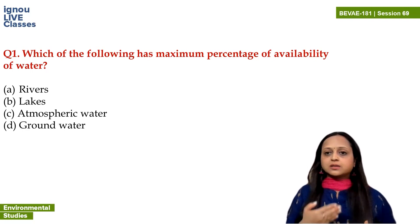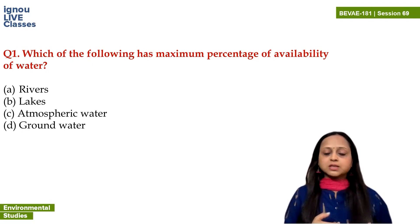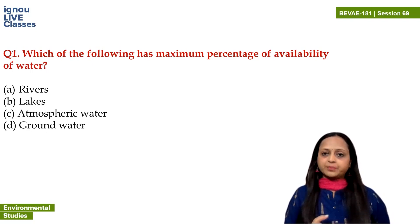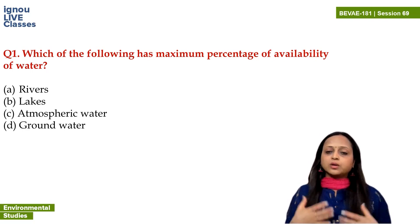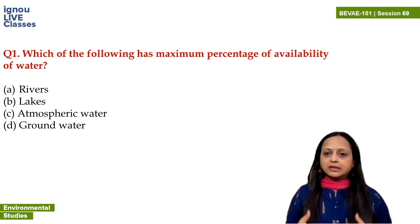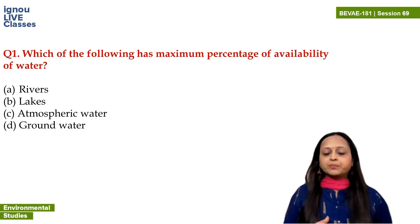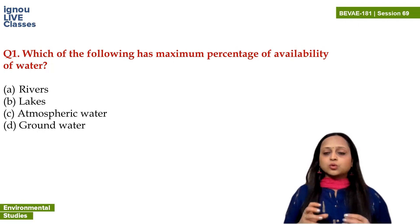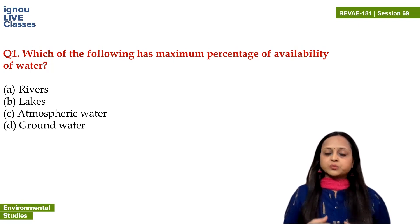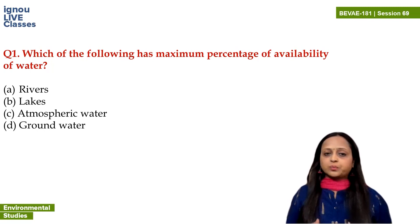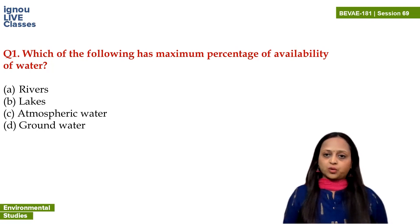Freshwater is 2.5% of total water. If we consider that 2.5% as 100% — because we use freshwater for all purposes: bathing, drinking, cooking, washing — almost 70% of that freshwater is present as ice and glaciers, and about 29% is present as groundwater.